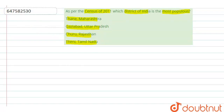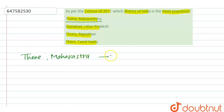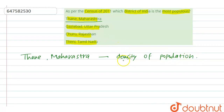The right answer is Thane Maharashtra. Thane Maharashtra has the highest population density. Density means how many people are living per square kilometer — how many people are living in one square kilometer area. So this is the highest density.